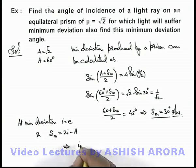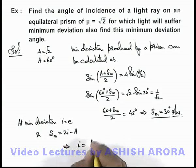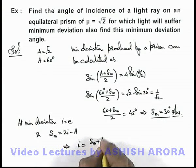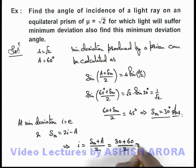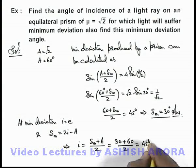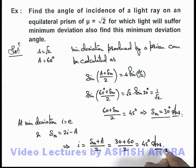If we substitute the values here this will be 30 plus 60 by 2, that will be 45 degrees. That will be the final answer to this problem.